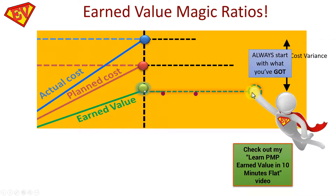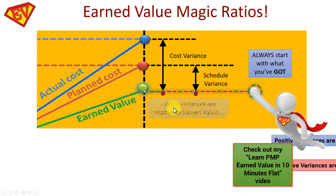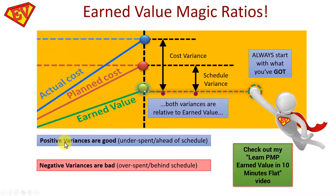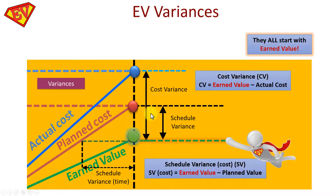The difference between Earned Value and Actual Cost gives you your Cost Variance, expressed in monetary terms (usually dollars). Similarly, Schedule Variance is the difference between Earned Value and Planned Cost. Positive variances are good — your project will underspend and come in ahead of schedule. Negative variances are bad — you'll overspend and deliver late. Draw this picture on scrap paper first thing in the exam, labeling Earned Value as your frame of reference, then noting Cost Variance and Schedule Variance.